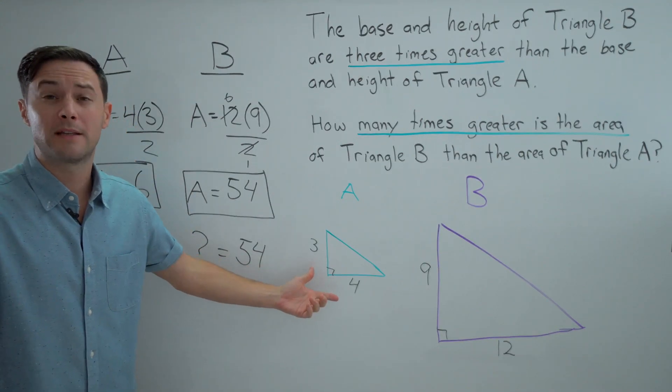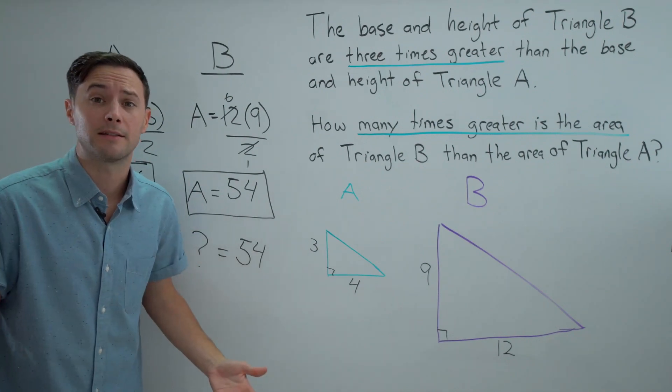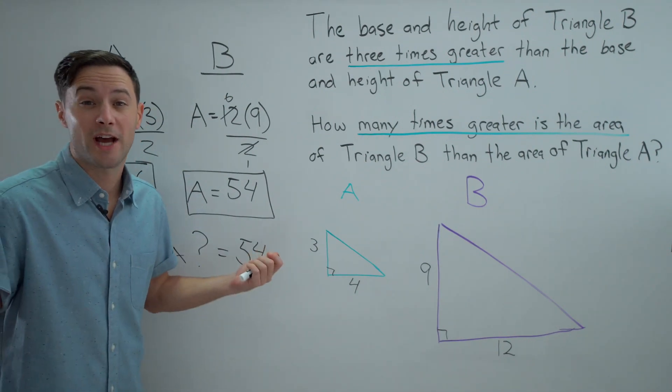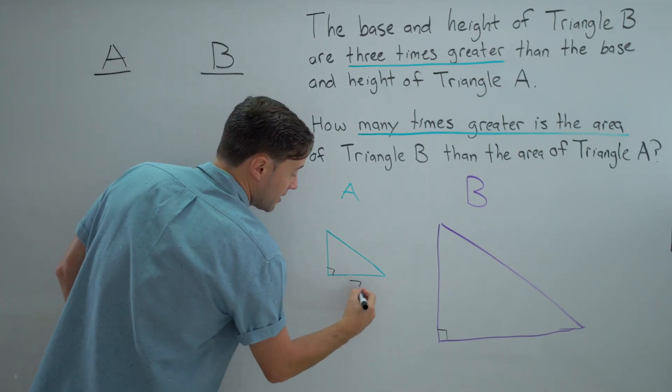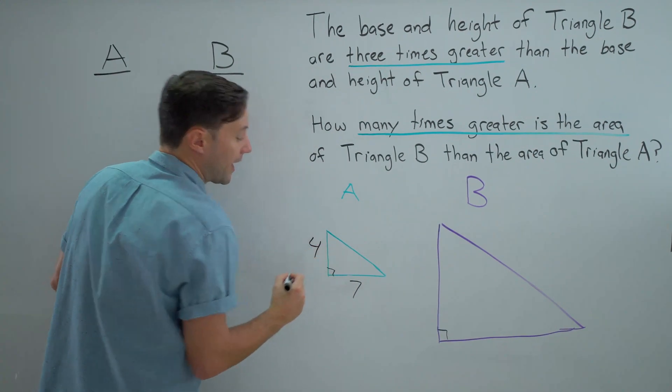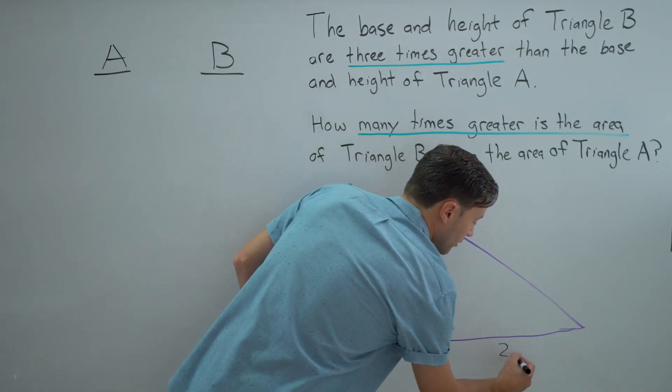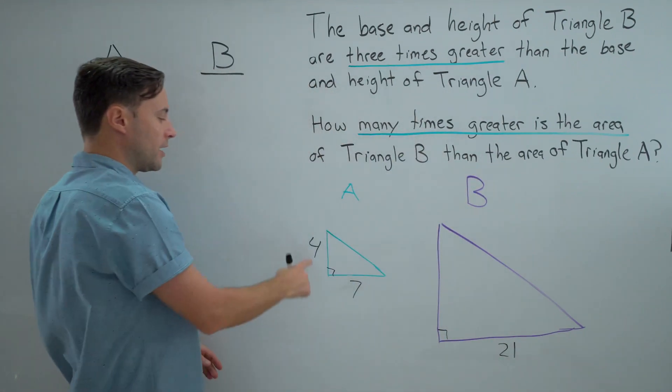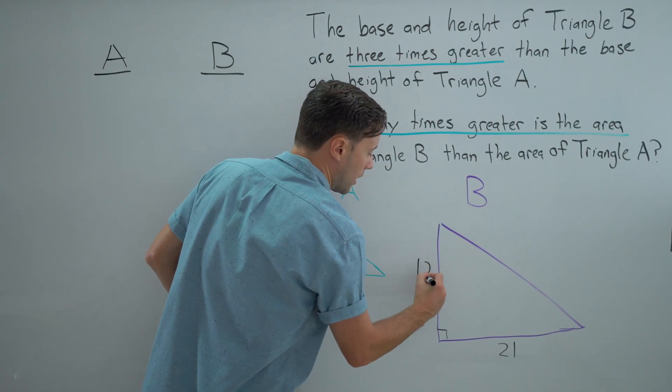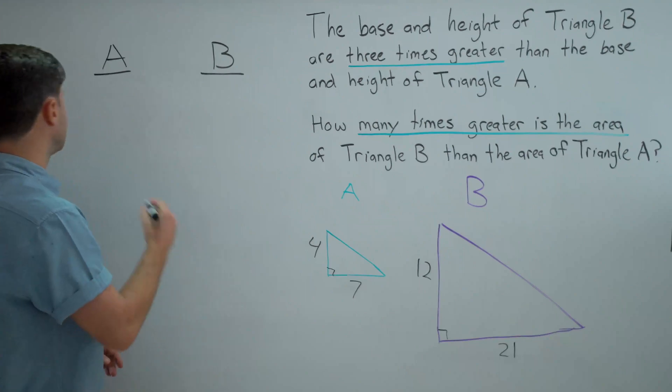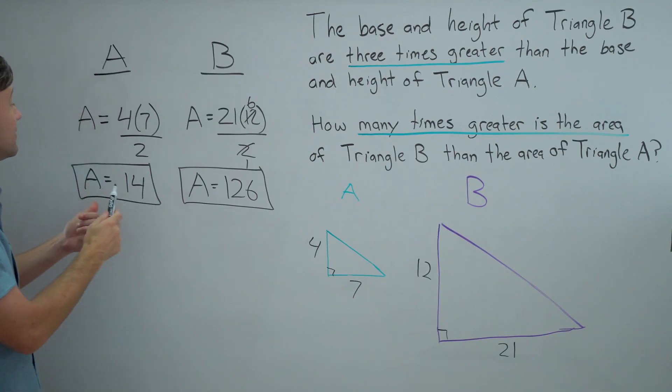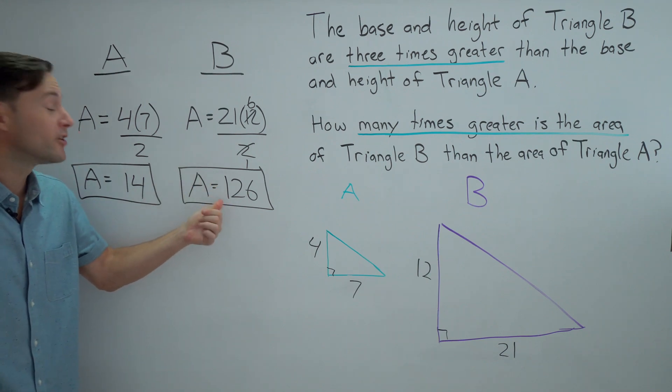Well, what if you pick different numbers? Would it change things? That's a very good question. Let's check. Let's try seven and four. So seven times three would mean for triangle B, it's got a base of 21. Four times three, that's going to be 12. Let's find the areas. So we got an area for triangle A of 14 and area of triangle B of 126.